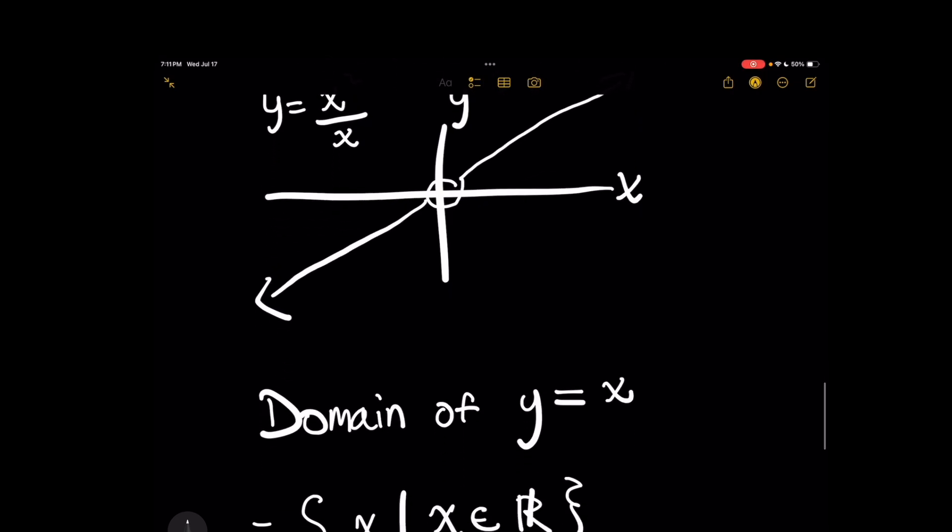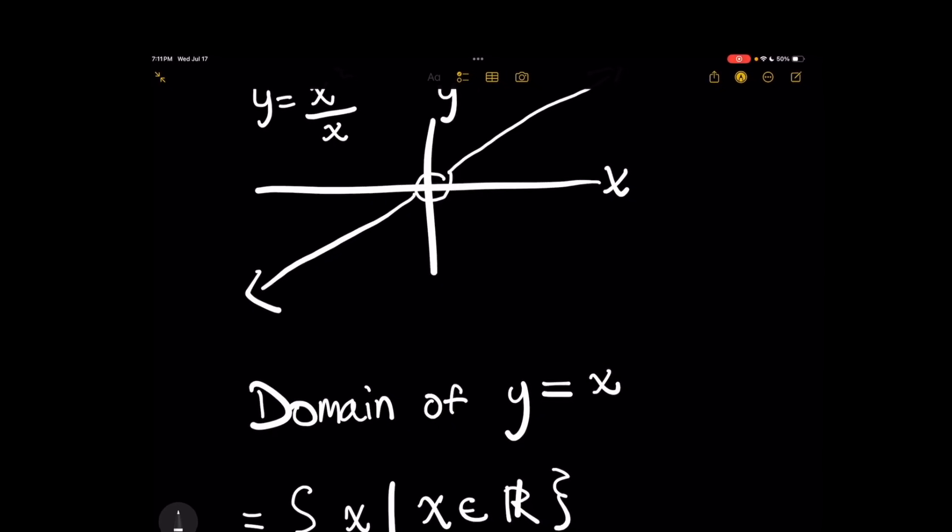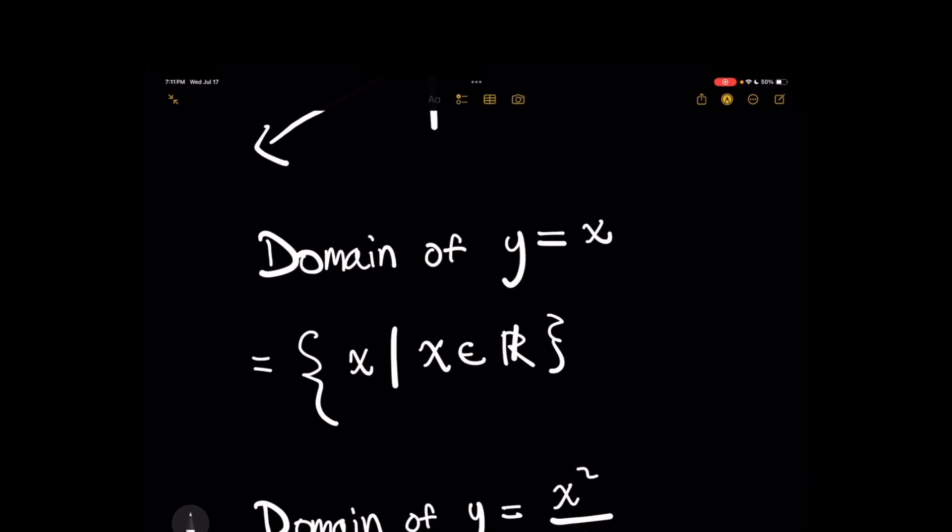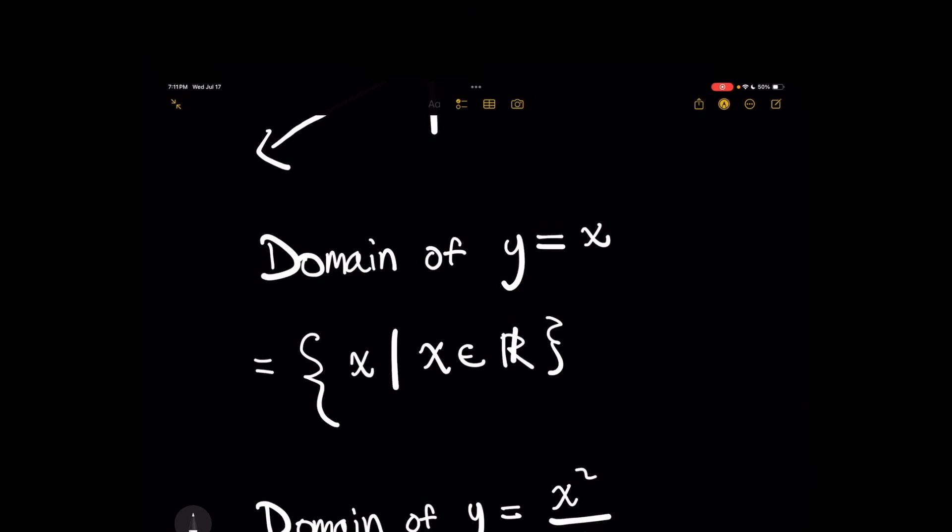To get the final answer of then what the domain of y equals x looks like compared to y equals x squared over x, the domain of y equals x is simply the set of all x values where x is any real number. That's where this r notation comes from.